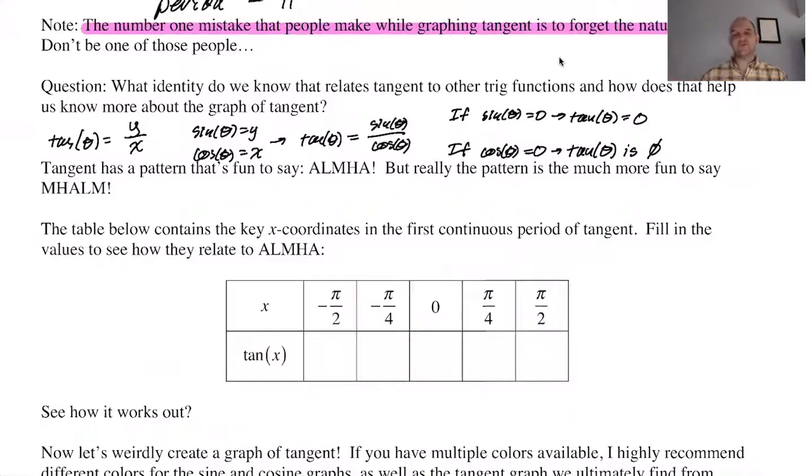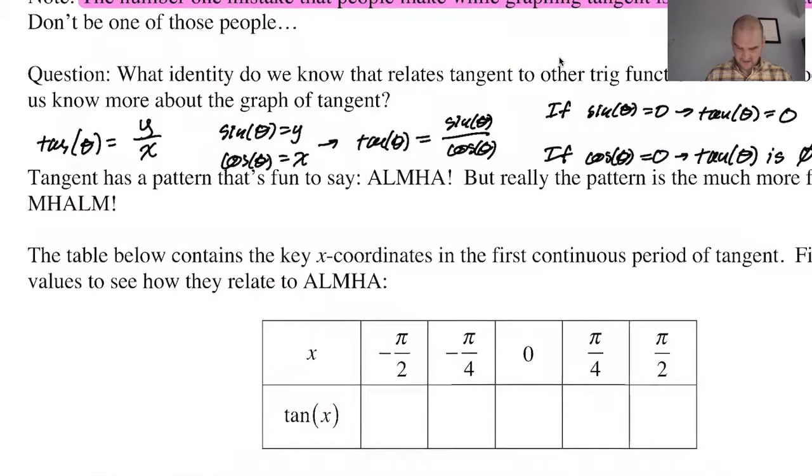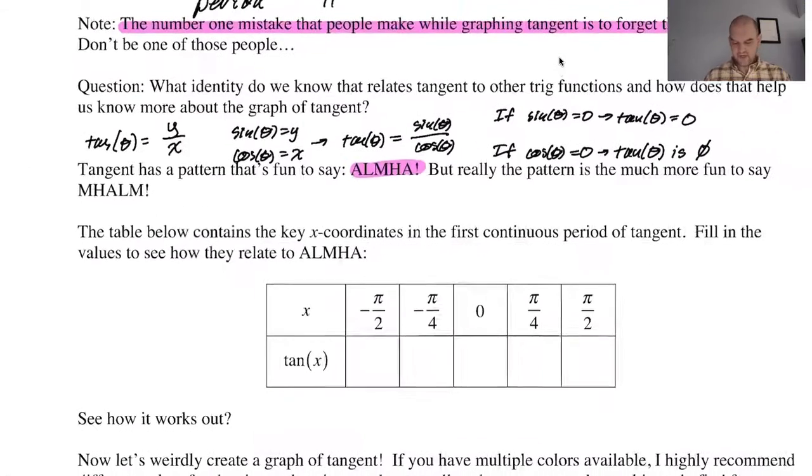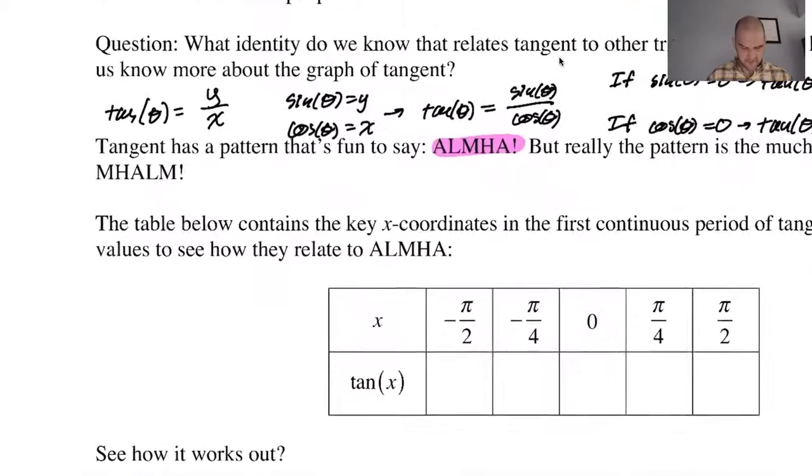We know a bunch of patterns for sine and cosine. Tangent has a pattern too. Tangent's pattern is a lot more fun to say. It's ALMHA. So what on earth does that mean? We will find out. But actually when you go to graph, you don't use ALMHA. You use the even better pattern of MAHALOM. Let's figure out what these mean.